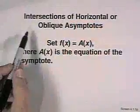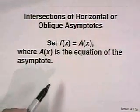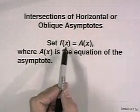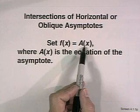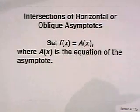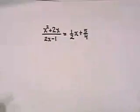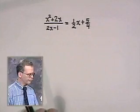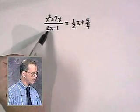Even though a graph may never cross its vertical asymptotes, it may sometimes cross an oblique or horizontal asymptote, crossing it and then approaching it further along. Let's take a look at how we can tell whether that happens. If a function f of x crosses its horizontal or oblique asymptote, we should set the original function equal to the equation of the asymptote. Let's do that with the function we just finished: f of x equals x squared plus 2x over 2x minus 1.